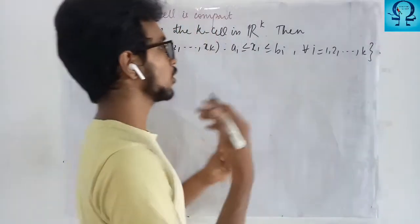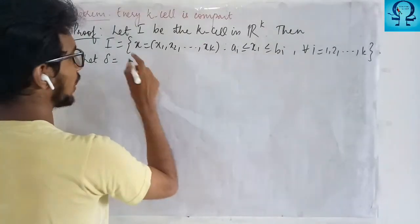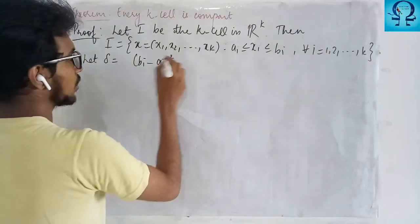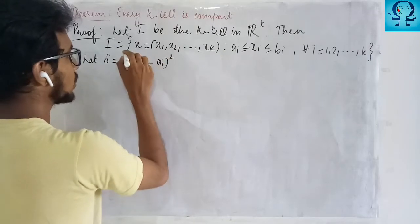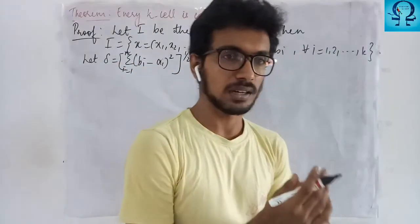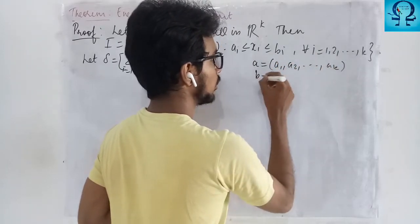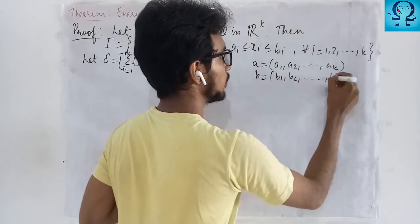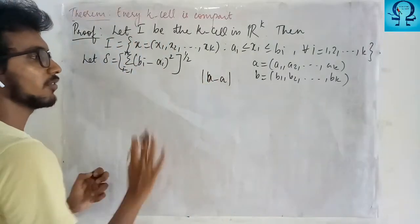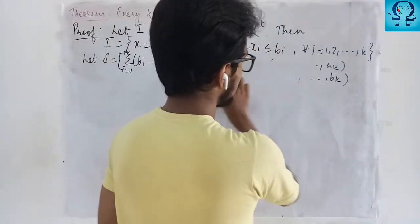Now, we define a value delta using these Ai's and Bi's as the square root of the sum of (Bi minus Ai) squared over all i. This is done by taking the point A = (A1, ..., AK) and B = (B1, ..., BK) and computing the distance between A and B, naming that distance delta.